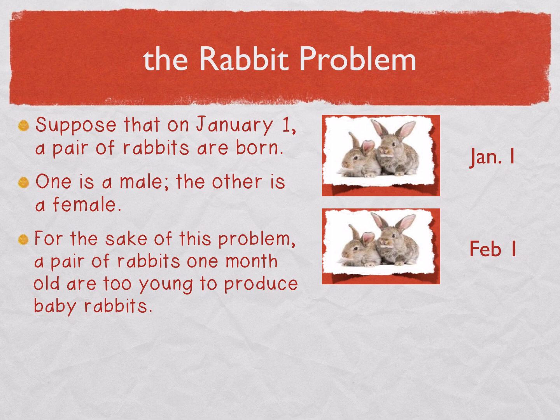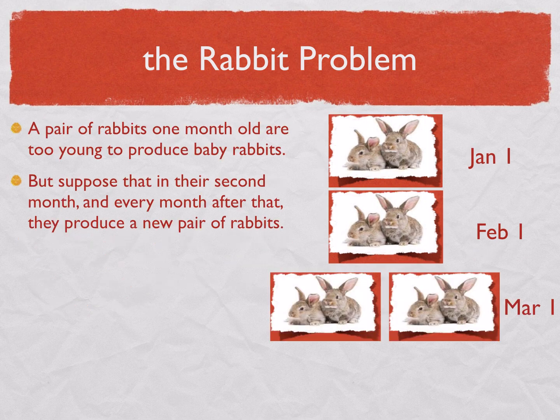Now in this problem, when they are old enough to produce rabbits, they always produce rabbits in pairs — a male and a female. Here's how the rabbit problem goes: a pair of rabbits one month old are too young to produce baby rabbits, but suppose that in their second month, and every month after that, they produce a new pair of rabbits.